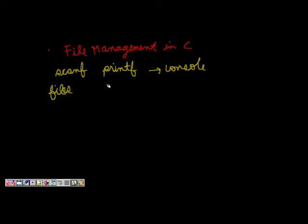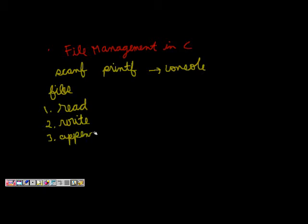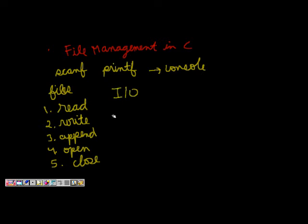Files can be stored permanently on the computer on your storage devices. We can read those files later, we can write in those files, and we can append in those files. We have to open the files for reading and writing, appending, and then closing the file. These are some of the basic operations, and all of this comes under the input-output category.